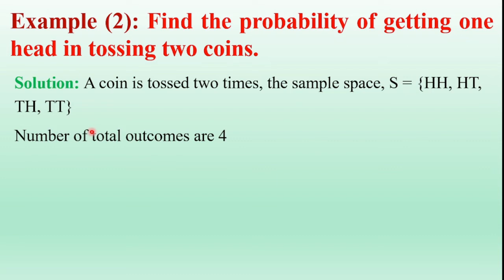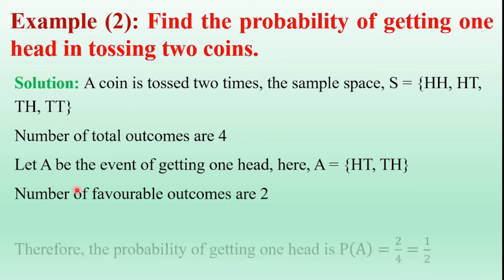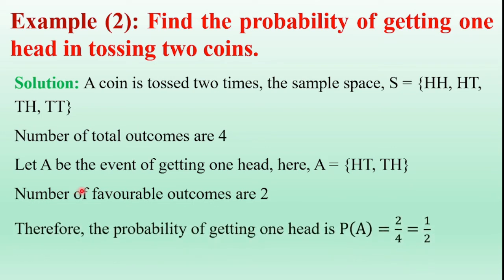Now here we want to determine the probability of getting one head in tossing two coins. Getting one head — the possible combinations are head-tail and tail-head. There are two favorable outcomes. So therefore, the probability of getting one head equals favorable outcomes divided by total number of outcomes, which is two divided by four, equal to one by two.